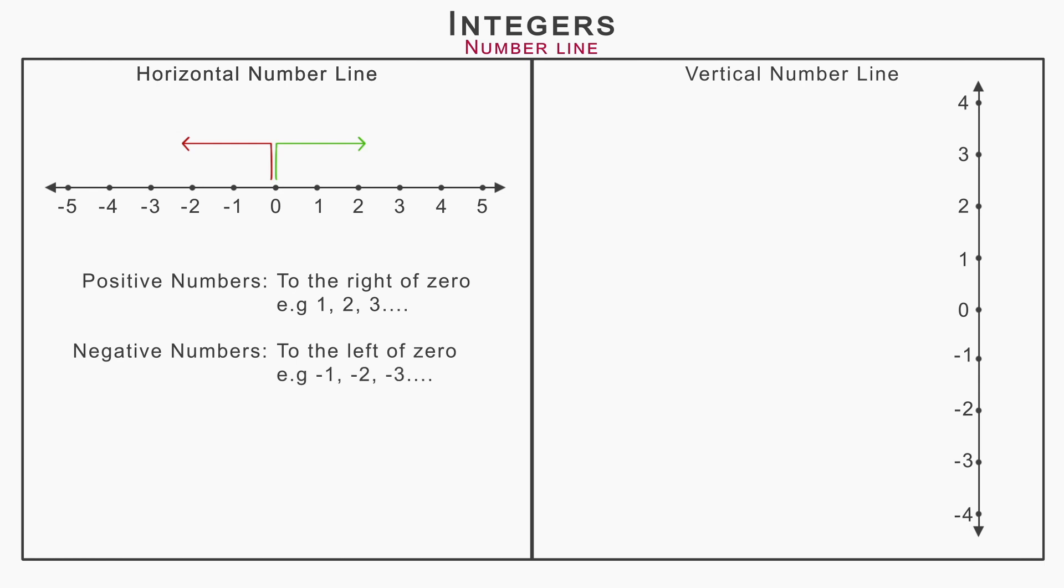Whereas on the vertical number line, positive numbers must be above zero and negative numbers must be below zero.